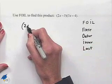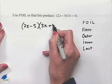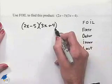When we rewrite this, 2x minus 5 times 3x plus 4, we're going to use this order in order to multiply.